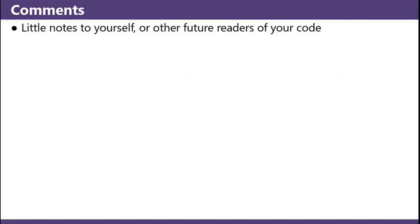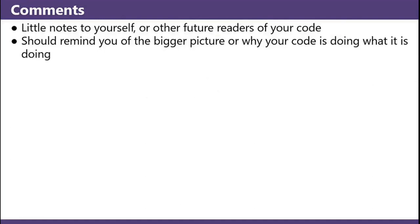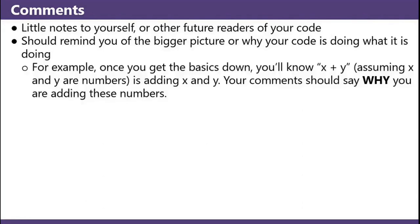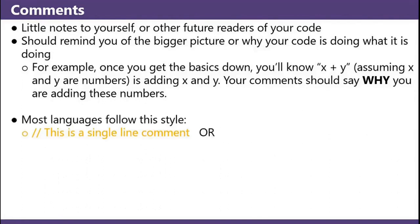Comments are little notes to yourself or other future readers of your code. They should remind you of the bigger picture of why your code is doing what it's doing. For example, once you get the basics down, you'll know x plus y — assuming x and y are numbers — is adding x and y. Your comment should say why you're adding these numbers. Many languages follow this style: forward slash forward slash for a single line comment, or forward slash asterisk for a multi-line comment.